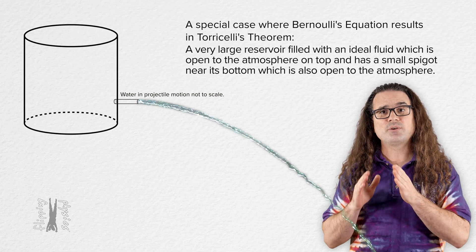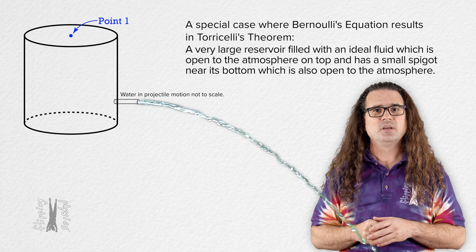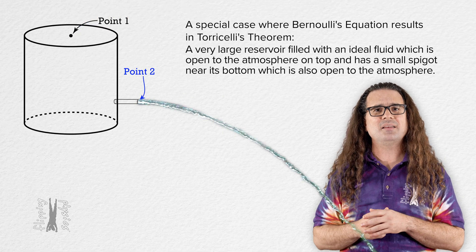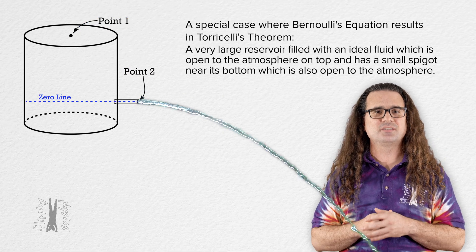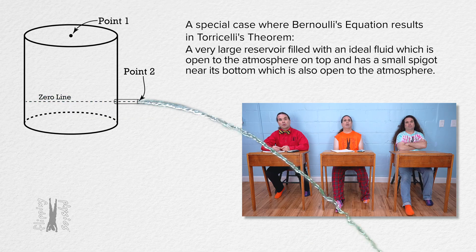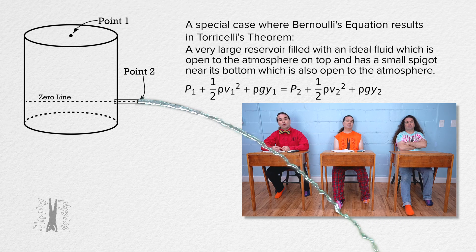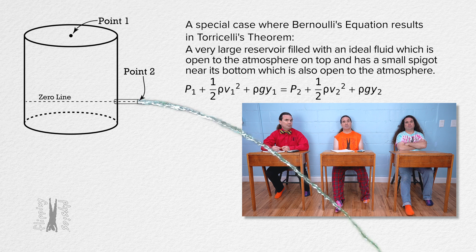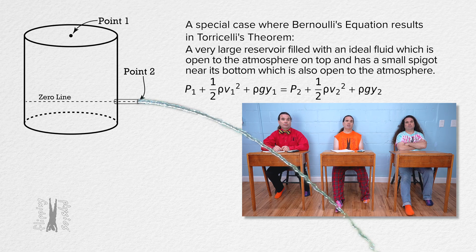First we identify point 1 at the top of the fluid, point 2 at the end of the spigot, and the horizontal zero line at the center of the spigot. Bobby, please give us Bernoulli's equation. Okay. Pressure at point 1 plus 1/2 times fluid density times the speed at point 1 squared plus fluid density times gravitational field strength times the vertical height of point 1 above the horizontal zero line equals that same thing, only change all the 1 subscripts to 2's. That's Bernoulli's equation.